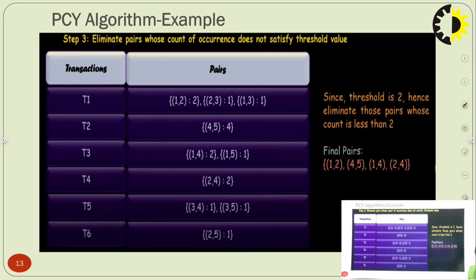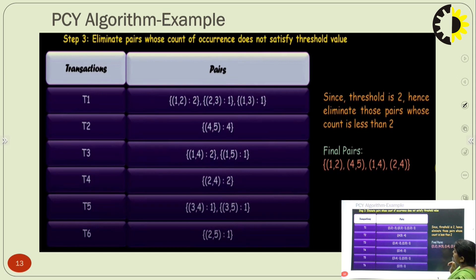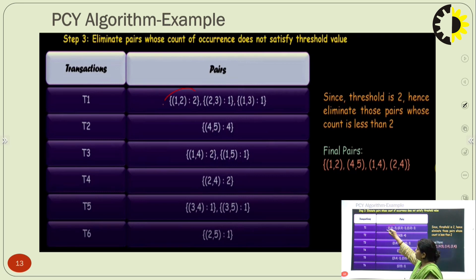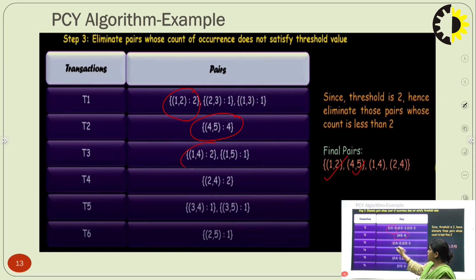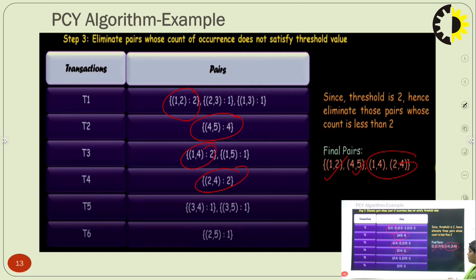Since the threshold value is 2, we eliminate those pairs whose count is less than 2. The pairs retained are: (1,2) with count 2, (4,5) with count 4, (1,4) with count 2, and (2,4) with count 2. These 4 pairs are considered as the final pairs going forward.